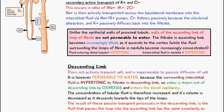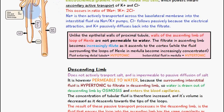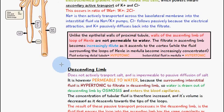Lastly, we're going to talk about the descending limb of the loop of Henle. The descending limb doesn't actively transport salt and is impermeable to passive diffusion of salt, so there is no movement of salt in the descending limb. However, the descending limb is permeable to water because the surrounding interstitial fluid is very concentrated — the surrounding interstitial fluid is hypertonic to the filtrate inside the descending limb. Water is drawn out of the descending limb by osmosis, from high to low concentration, and then enters into the peritubular capillaries.